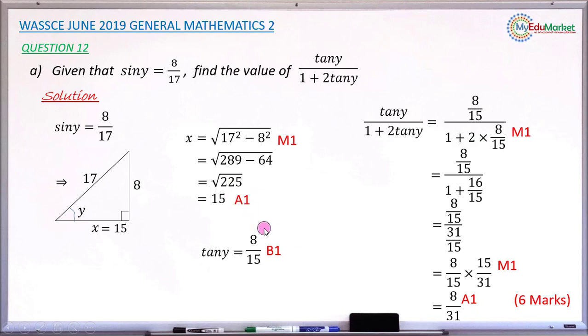And the next mark is writing the value of tan y exactly as 8 over 15, you have this bonus 1 mark. And when you now substitute tan y in the decimary problem that we asked to find its value, substitute correctly the value of tan y, you have this method 1 mark. And when you now simplify after this final stage where you change division to multiplication, you have this method 1 mark. And when you now have the final answer that is the value of tan y over 1 plus 2 tan y as 8 over 31 exactly, you have this accuracy 1 mark. So in total this very question has 6 good marks.